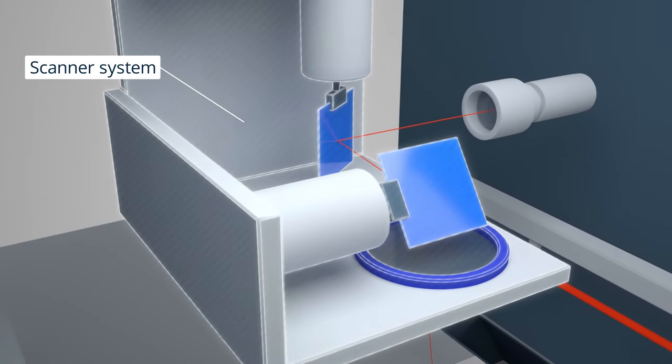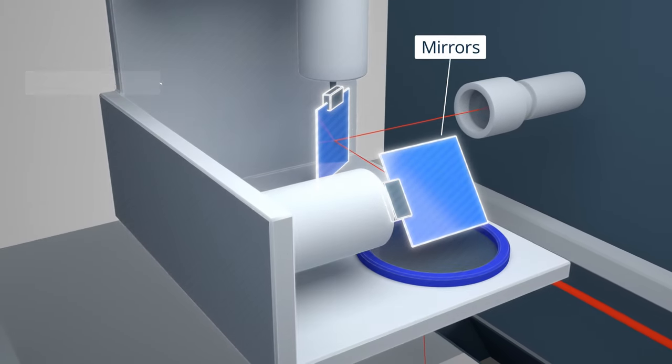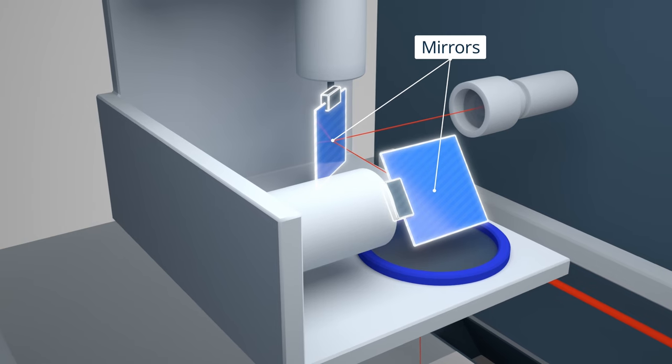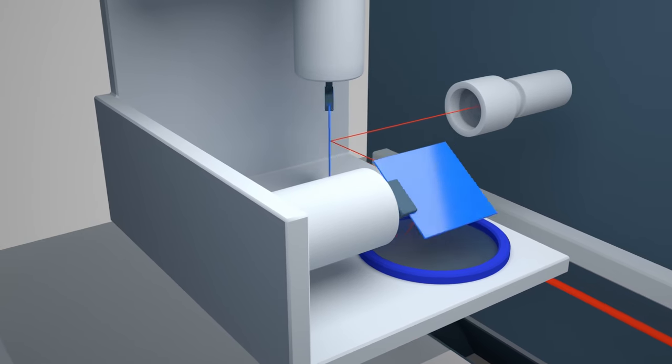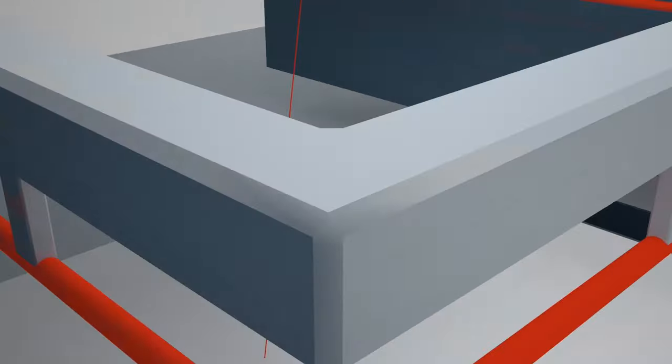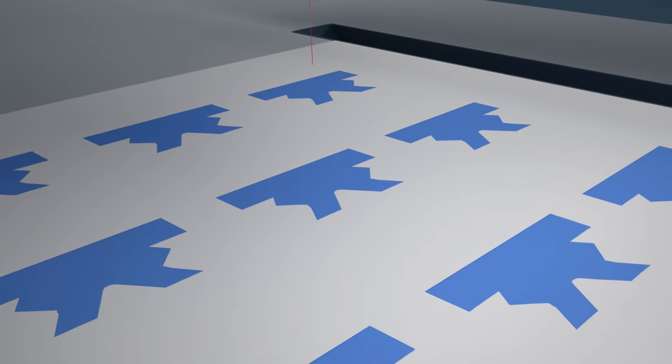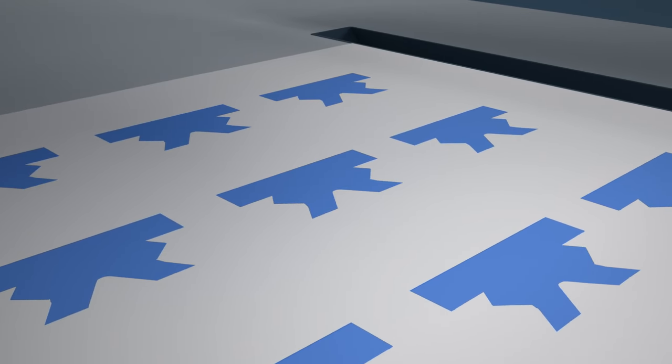The laser directs its beam to the scanner system which consists of a mirror controlled by a Galva motor system. The beam traces out the first layer of the part's cross-section and heats the powder to the material's melting point. The particles are then sintered together.